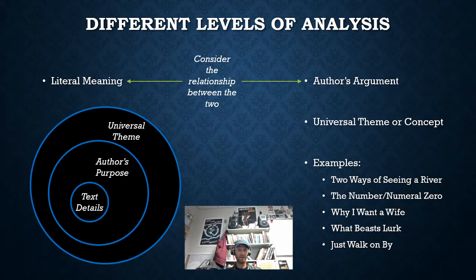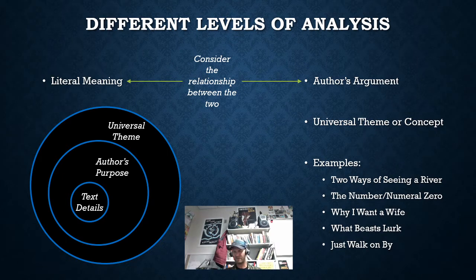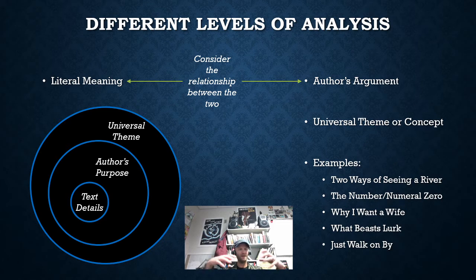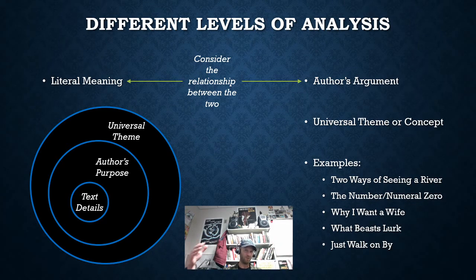One example would be Martin Luther King's 'I Have a Dream' speech. That was given in a moment. There are examples he uses — ethos, pathos, logos — the words he uses in the speech, but it doesn't exist on its own. It exists connected to a bigger, broader, universal idea or concept. Your task is to be able to work through those different levels as you're analyzing things.